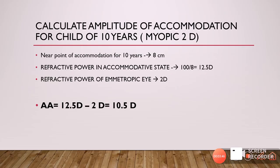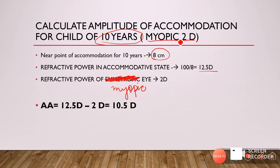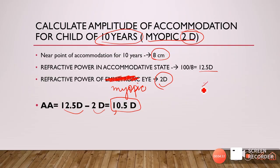Second example: the same 10-year-old child but myopic with 2 diopters of error. The near point is still about 8 centimeters. The refractive power in the accommodative state is 100/8 = 12.5 diopters. For a myopic eye, the refractive power at rest is 2 diopters. So amplitude = 12.5 minus 2 = 10.5 diopters. A myopic child needs slightly less accommodation compared to an emmetropic child to see from infinity to 8 centimeters.